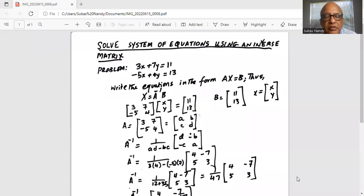We will solve a system of equations using an inverse matrix. The system has two variables: 3x plus 7y equals 11 and minus 5x plus 4y equals 13.